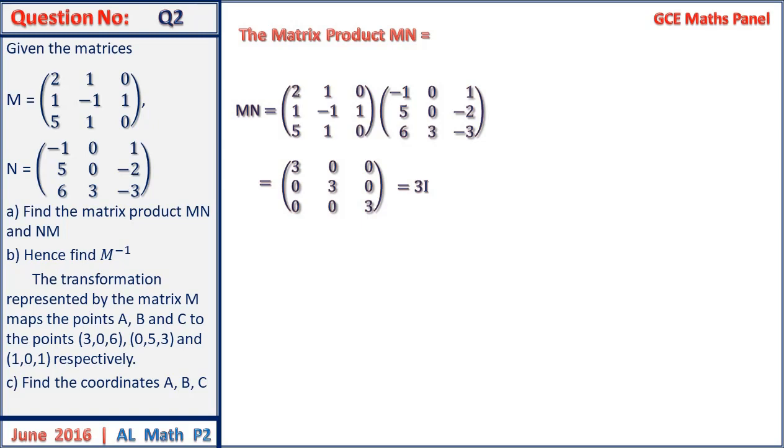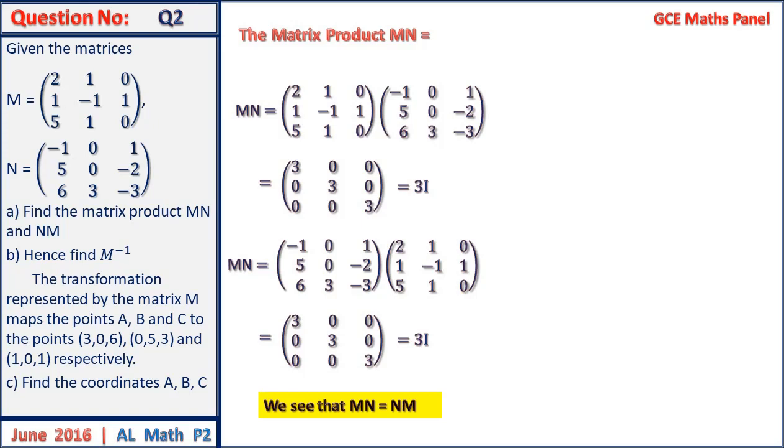Similarly, NM will be equal to matrix N times matrix M, and this product will equally give us a 3 by 3 matrix which is given by 3, 0, 0, 0, 0, 0, 0, 0, 3. And this is 3 times the identity matrix. From here we can conclude that MN is equal to NM.